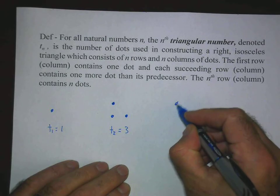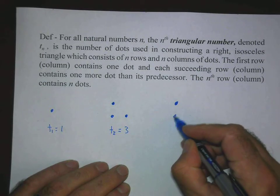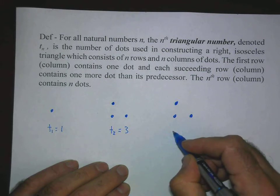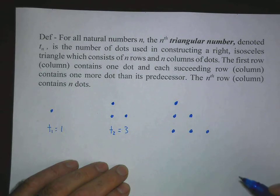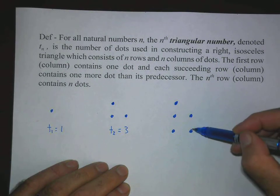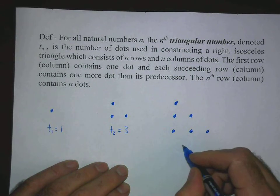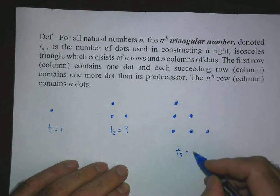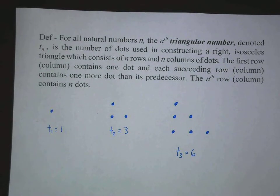Now let's do at least one more example. There's row 1, column 1, which has one dot. Here's row 2, which has two dots. Here's row 3, which has three dots. Also note: column 1, one dot; column 2, two dots; column 3, three dots. Our third triangular number has 1 plus 2 plus 3, which is six dots. So the third triangular number is six.